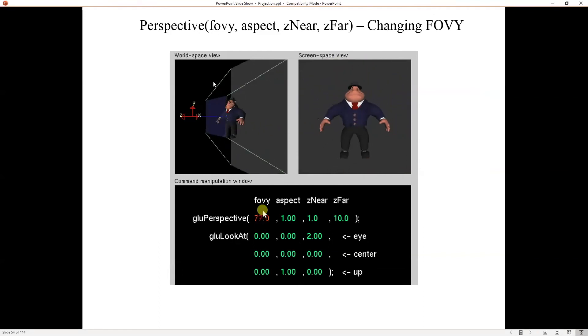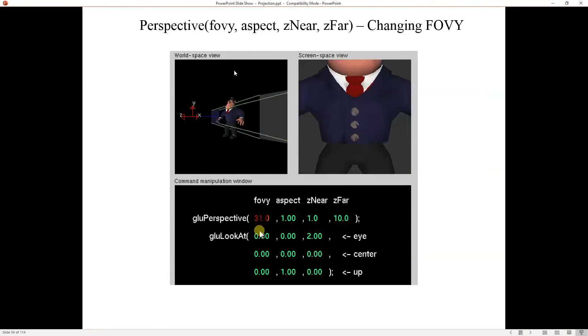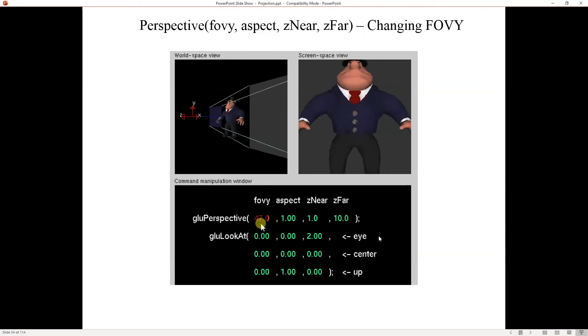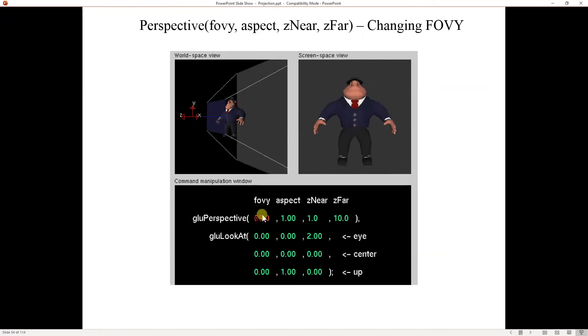So let's take a look at some example of what's going on. So here's the field of view. So I'm changing the field of view. As the field of view gets bigger, the object gets smaller, right? Because we're seeing more of the world. More of the world. So I think this should be relatively intuitive.